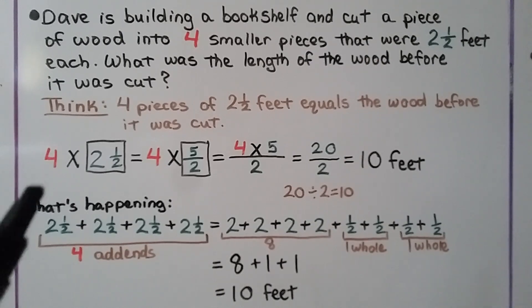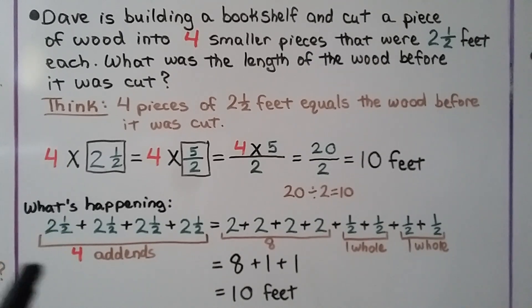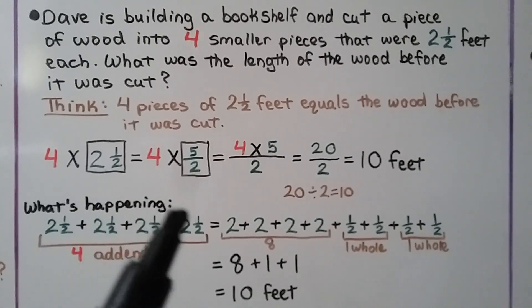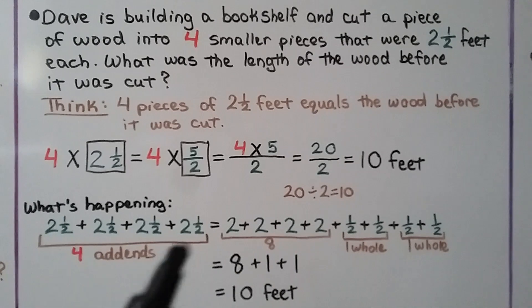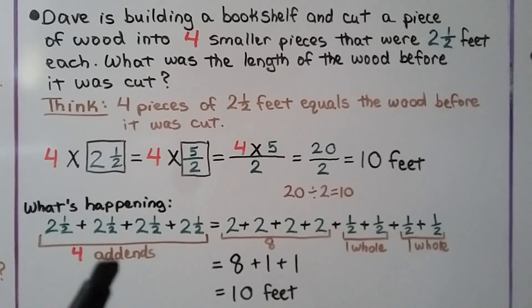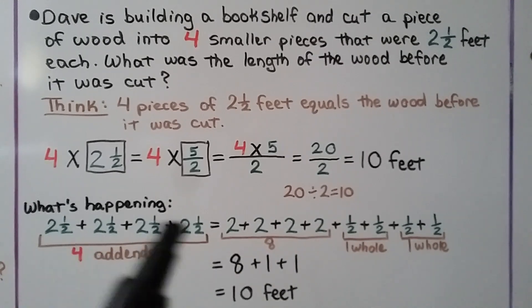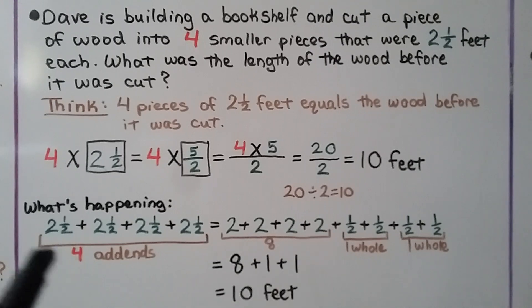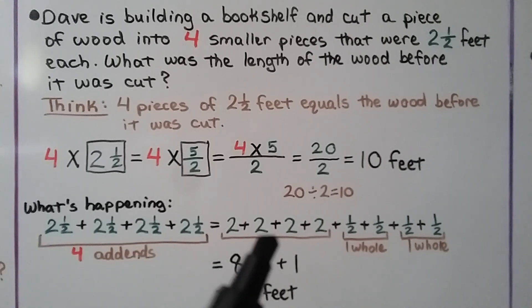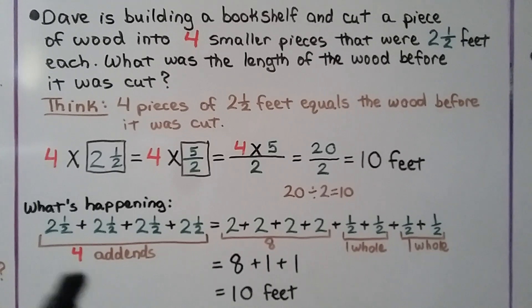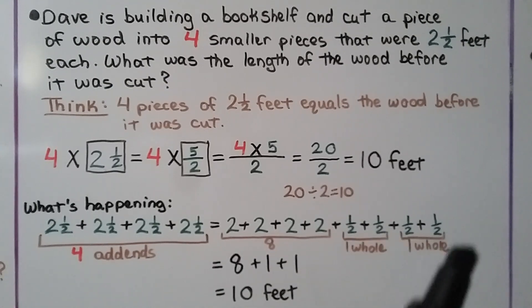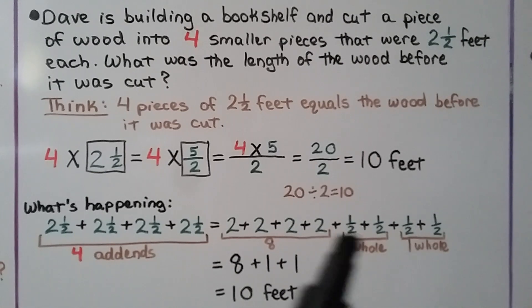Here's what's happening. We had 4 times 2 and a half. Using repeated addition, that would be 2 and a half plus 2 and a half plus 2 and a half plus 2 and a half — that's 4 add-ins. We can put the 2's together: 2 plus 2 plus 2 plus 2, that equals 8. Then we can add the halves: 1 half plus 1 half plus 1 half plus 1 half. This makes 1 whole and this makes 1 whole — we have 8, 9, 10 feet.